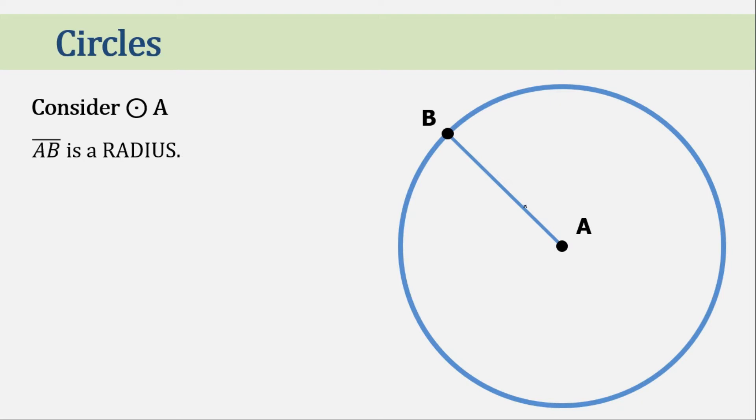Remember that the segment is represented by this symbol. Now, to define radius again, it is a line segment from the center of the circle to any point on the circle. So that is radius.